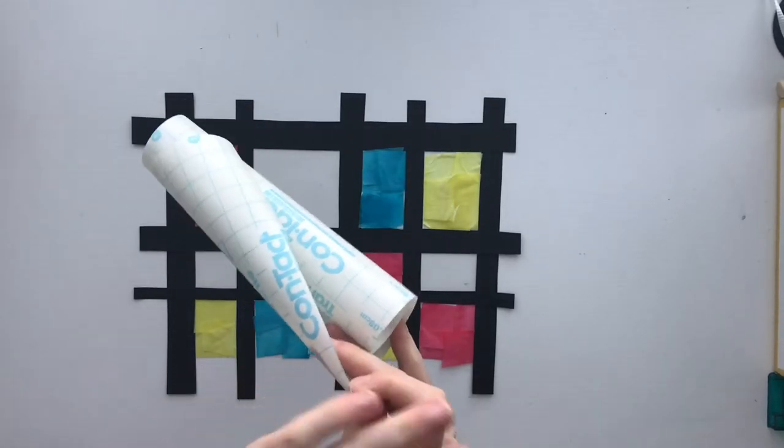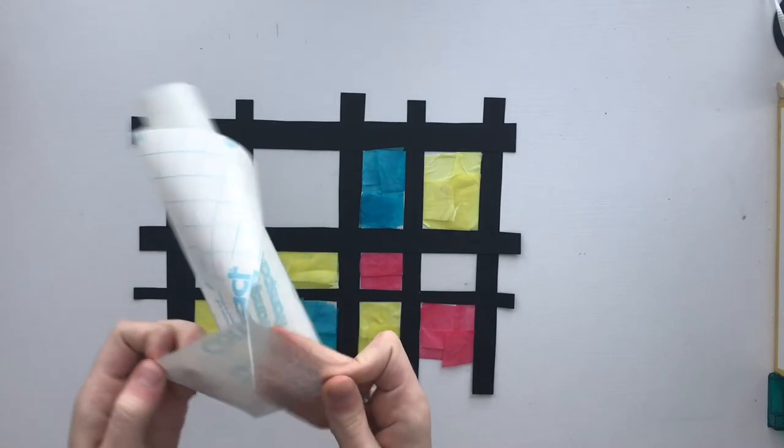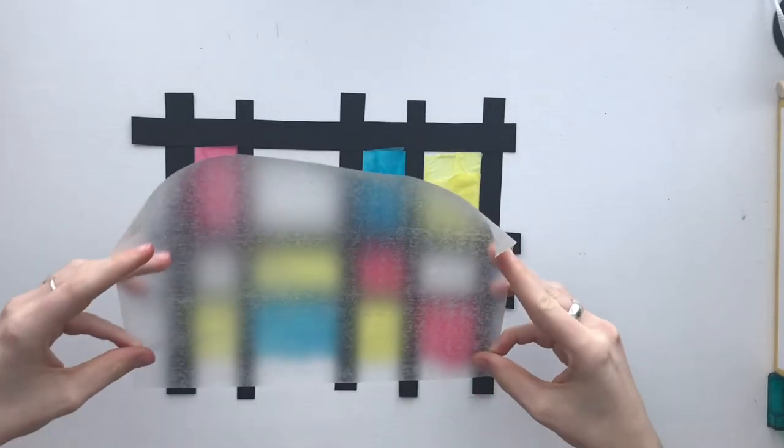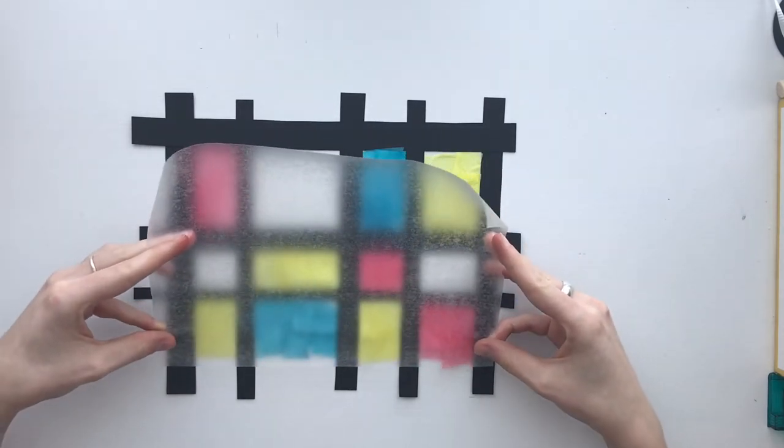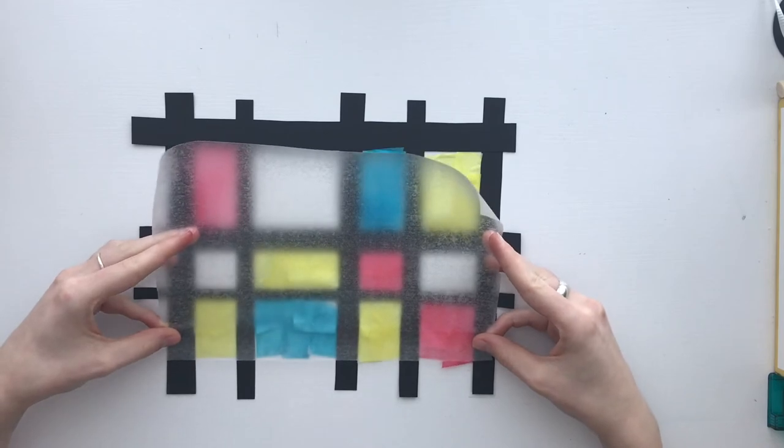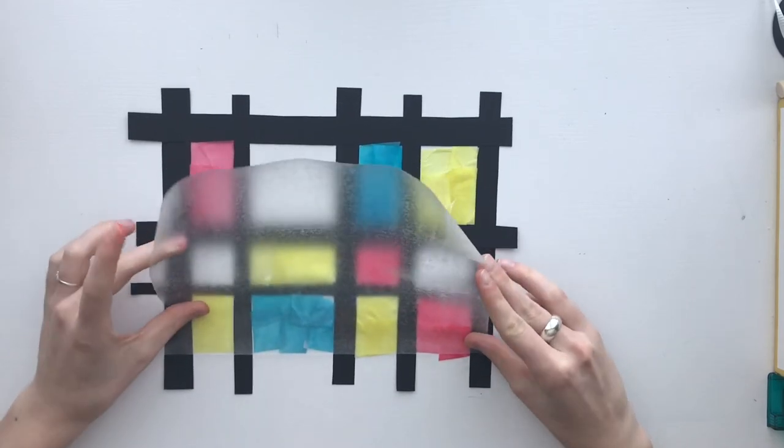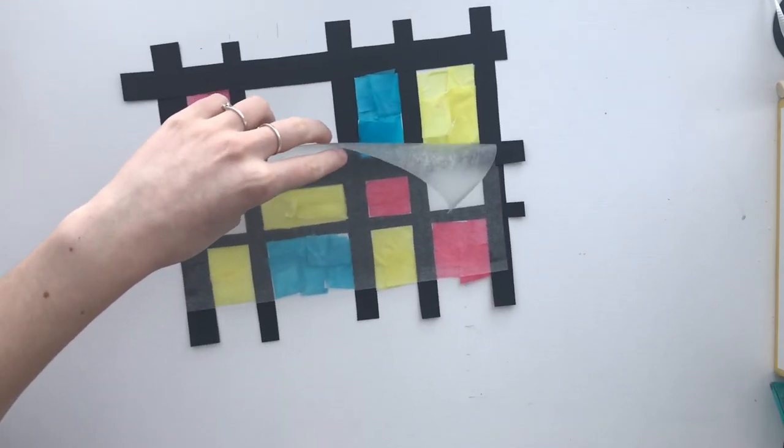Get another piece of contact paper that is the same size as your other piece and peel the paper off. Next, carefully position the contact paper sticky side down on the bottom edge of the tissue paper. During this step, make sure that you have a ruler handy to smooth out the contact paper over your tissue paper and to prevent air bubbles.